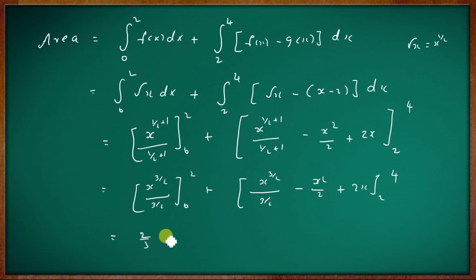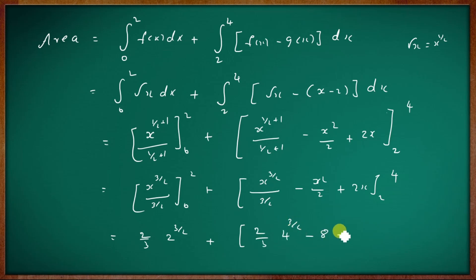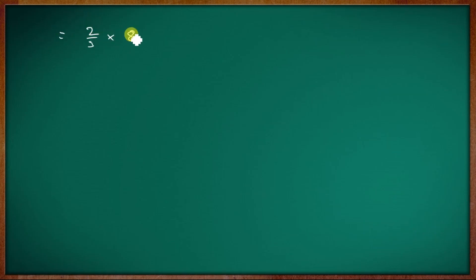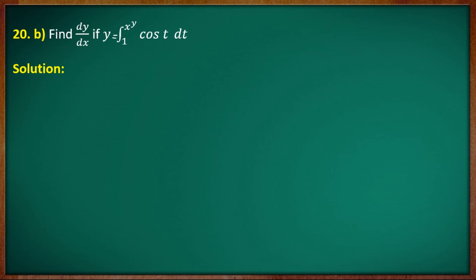This equals 2 by 3 times 2 raised to 3 by 2. Then evaluating the second part: substituting upper and lower limits gives terms including 2 by 3, minus 2 plus 4, and simplifying step by step to get the final area value.